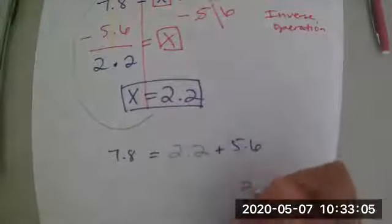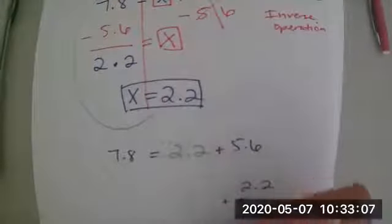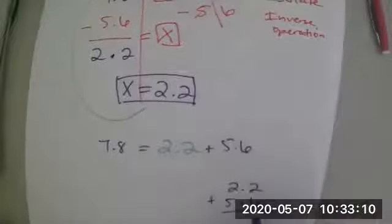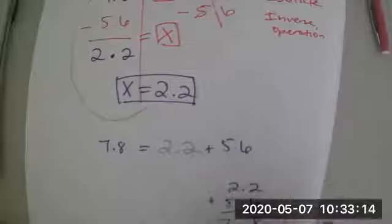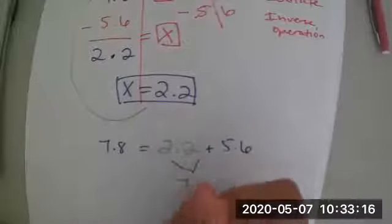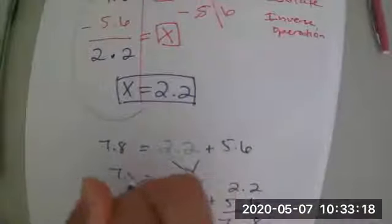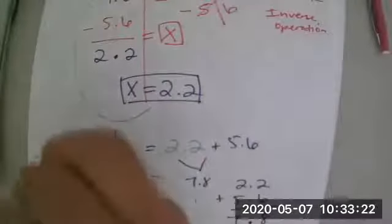So I'm going to go ahead and add 2.2 plus 5.6. Again, line up those decimals. 6, 7, 8, and the decimal down, 5, 6, 7. So this side is equal to 7.8, and this side is equal to 7.8. So our equation is balanced, and we've got it right.